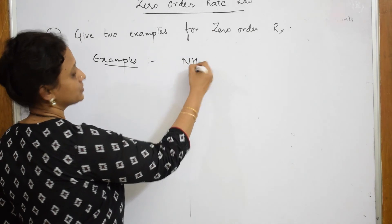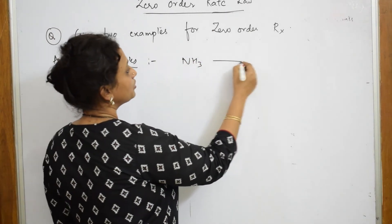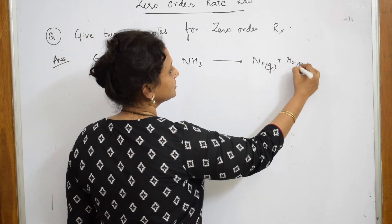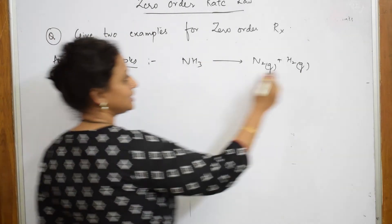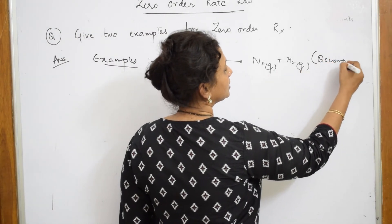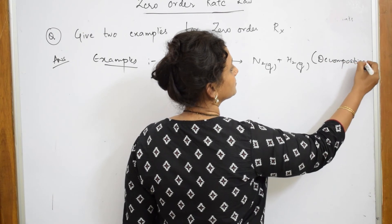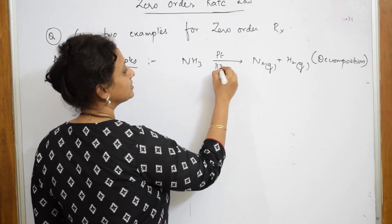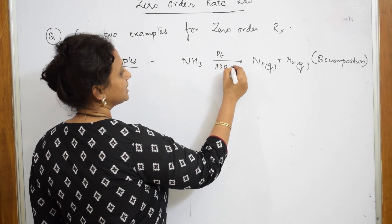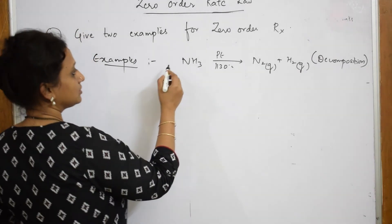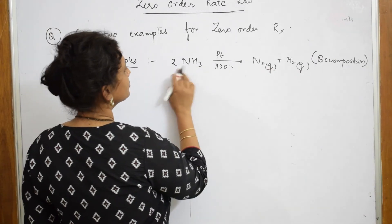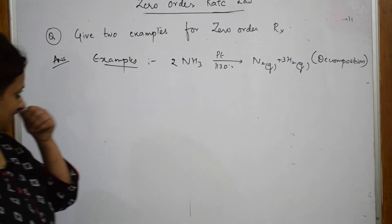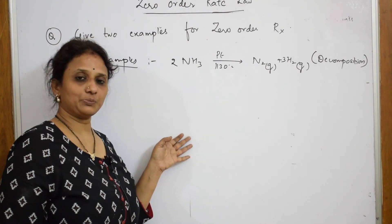The first example is the ammonia decomposition reaction: 2NH₃ breaks up into N₂ gas and 3H₂ gas — a decomposition reaction. This requires a platinum catalyst; in the presence of platinum at 1130 degrees, the reaction occurs. This is the best example for zero order kinetics, where the rate of reaction is directly proportional to the zero power of the reactants.